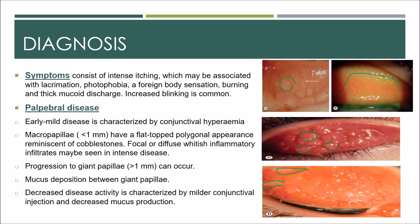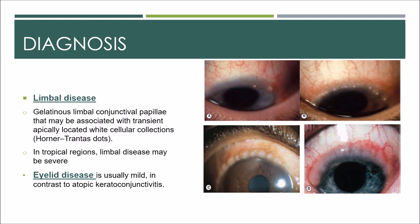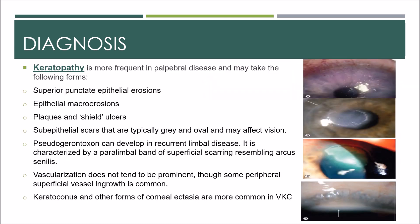Decreased disease activity is characterized by milder conjunctival injection and decreased mucus production. In limbal disease, gelatinous limbal conjunctival papillae may be associated with transient apically located white cellular collections known as Trantas dots. These expand across the limbus, and in tropical regions, limbal disease may be severe, affecting the whole limbal area with giant papillae.